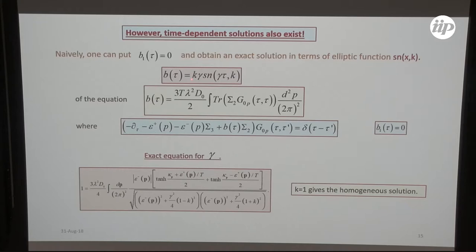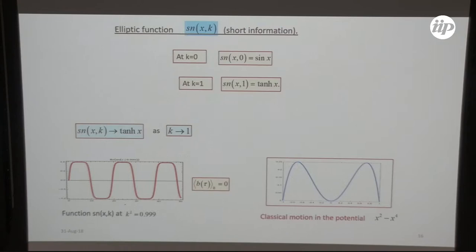But if k is not equal to unity, then one has this elliptic function. So I remind you what this elliptic function is. One can visualize this function in a very simple way. Suppose one has a potential x squared minus x to the fourth power. Suppose one wants to describe motion of classical particle moving in this potential. One can have different possibilities. This classical particle can either oscillate or it can start here with zero velocity, go down and then here.